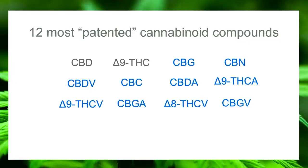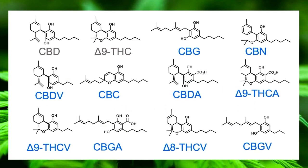These are the 12 most patented cannabinoids. Today I'd like to do a little bit of a tutorial that helps people walk through these acronyms, and at the risk of inducing some anxiety related perhaps to bad experiences in an organic chemistry class for some of you, the way to do that is to think about the structures of these compounds. These are the structures of these 12 cannabinoids.